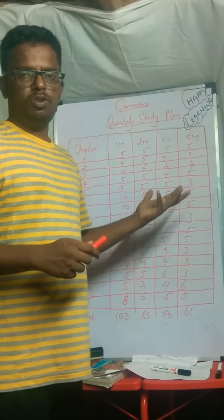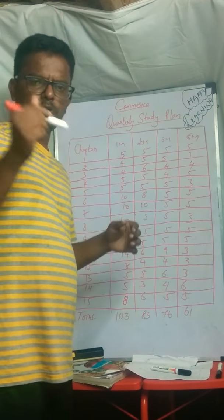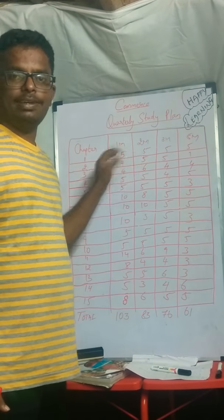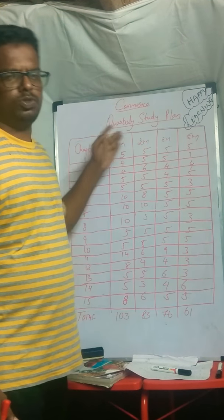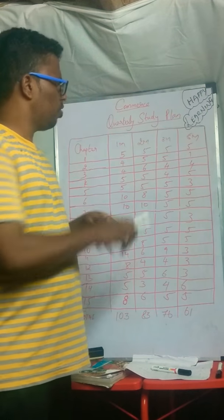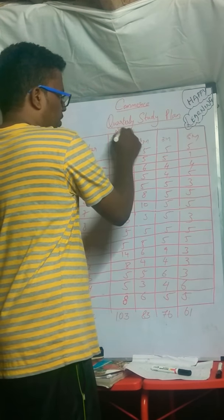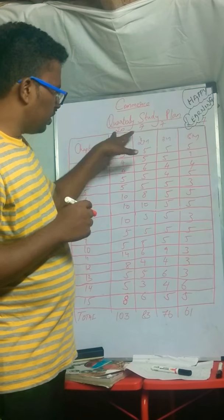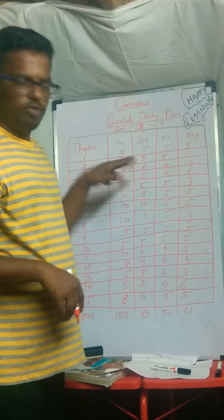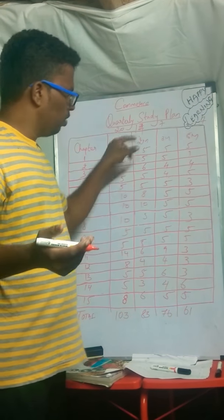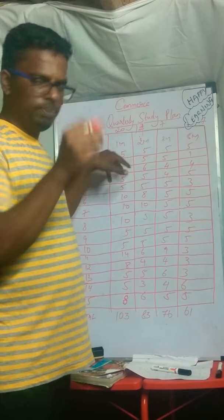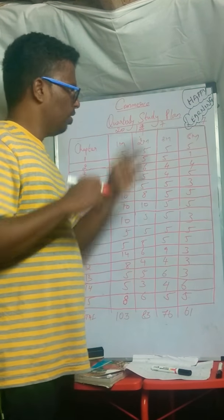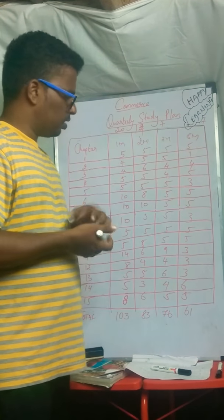Even if you don't write in depth for three and five marks, they will check the main headings and the way you present the paper. But one mark and two mark is the real game. For example, if one mark is 20 marks and two mark is 14 marks: 20 questions, 7 out of 10, 7 out of 14 — so 20 plus 14 is 34. When you get 34, you have already passed, and with good paper presentation you will get good marks here as well.